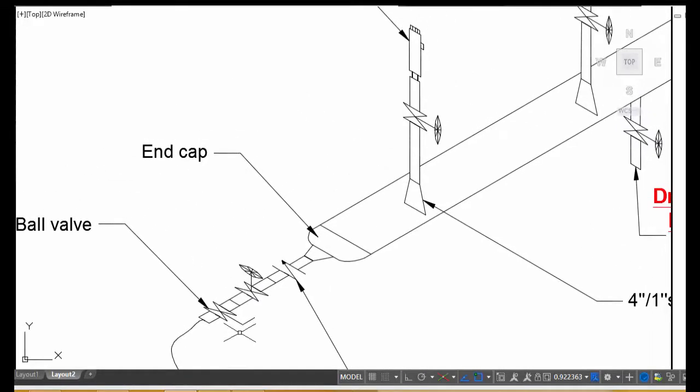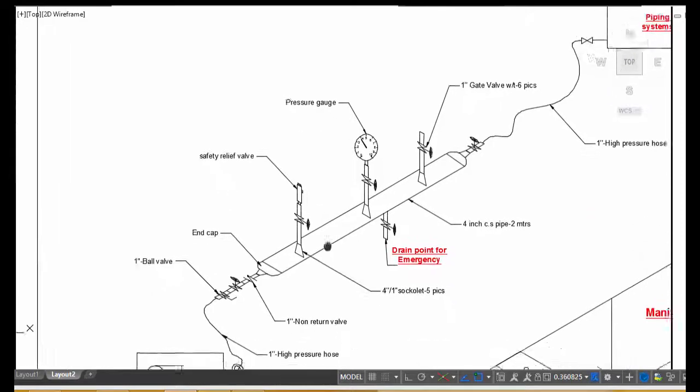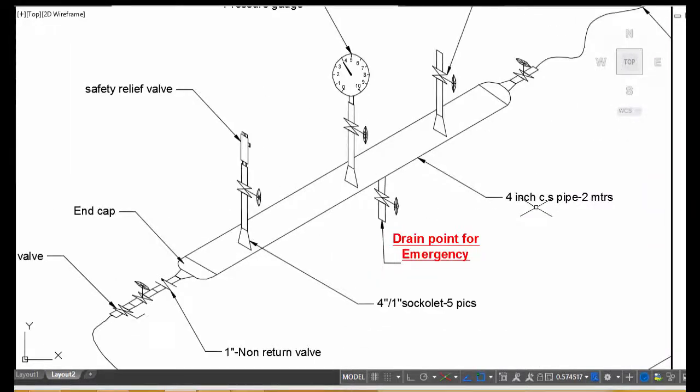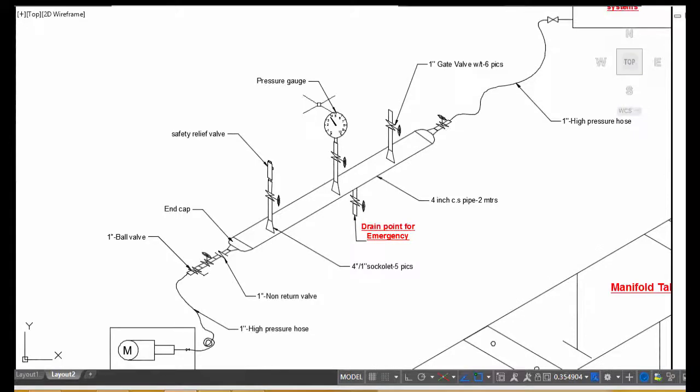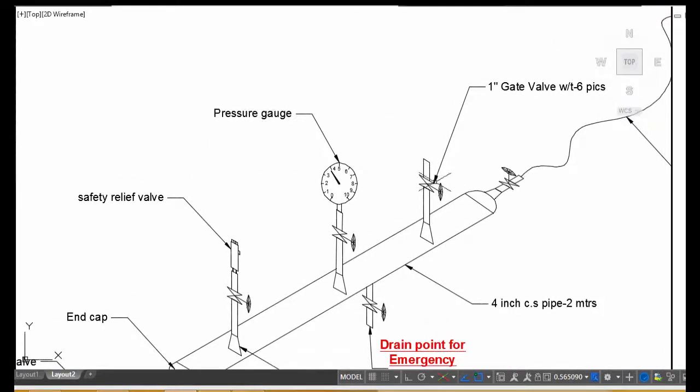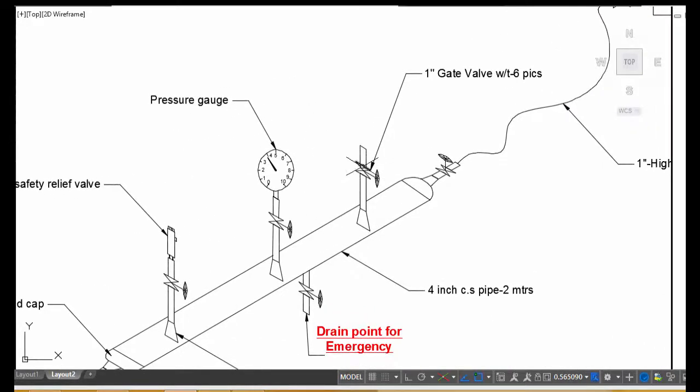Then, this four-inch pipe is divided into three parts: one for SRV (safety relief valve) or PSV (pressure relief valve), next one for pressure gauge, and next one for emergency dewatering and filling the water.